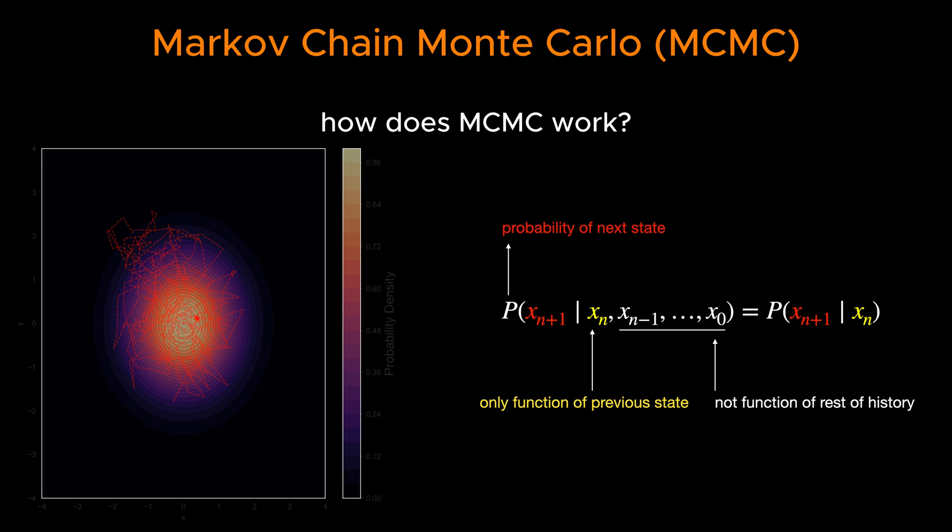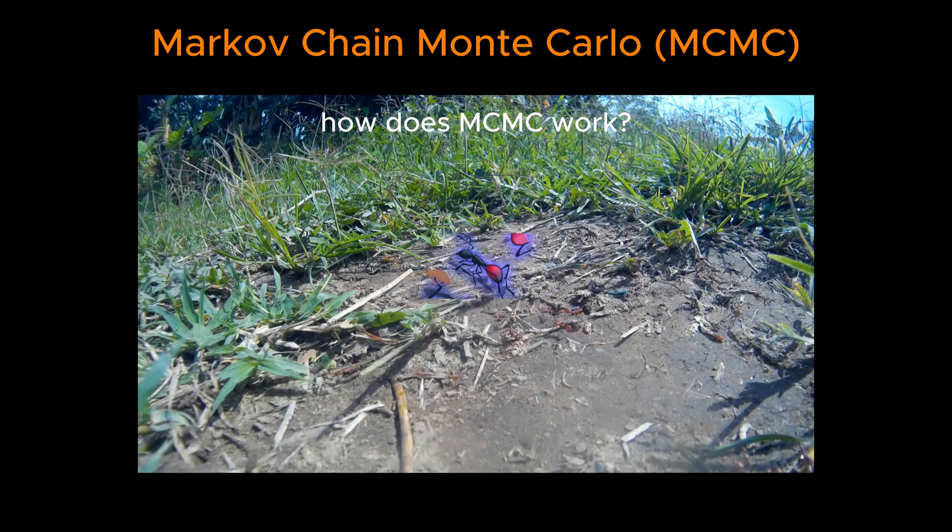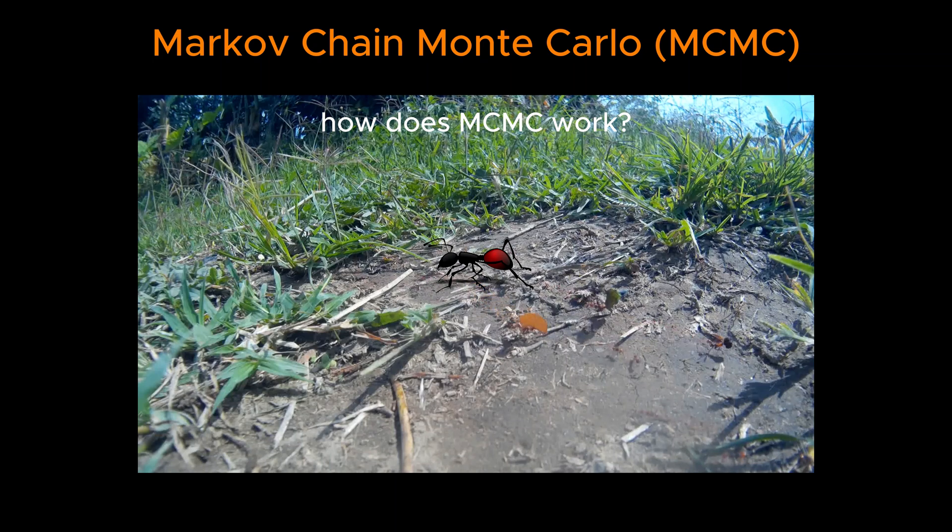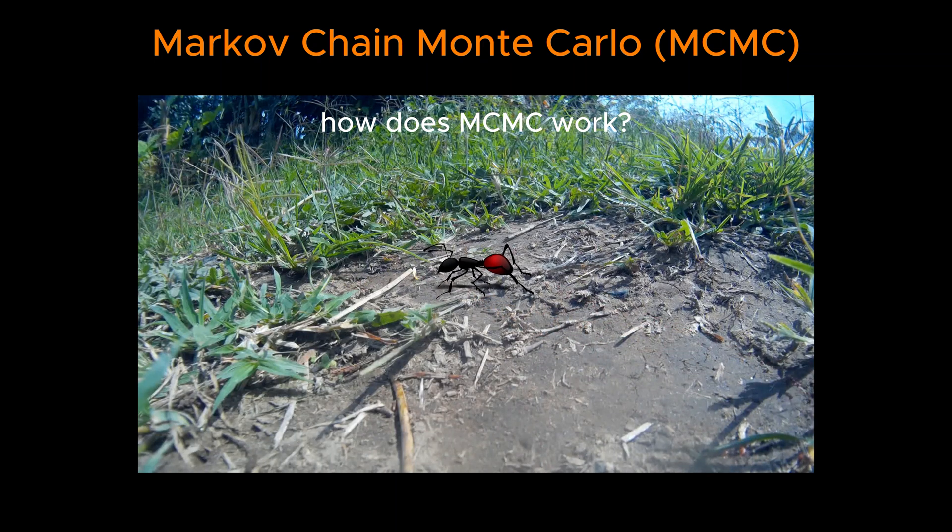To see what I mean, imagine we are going to track an ant. The ant can only move one step at a time, either forward, backward, left, or right.